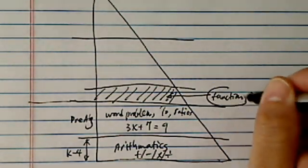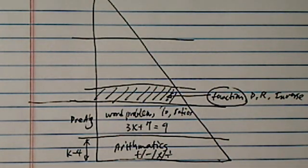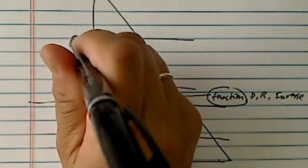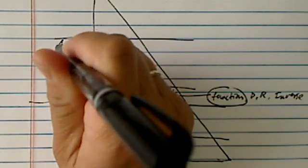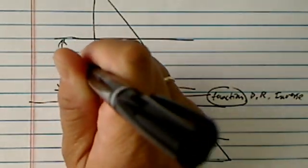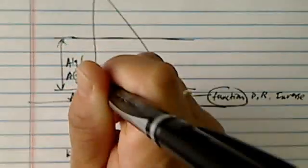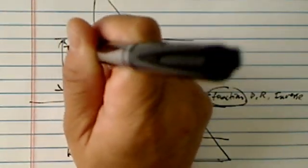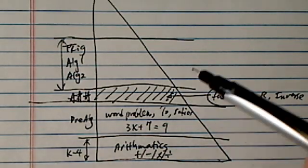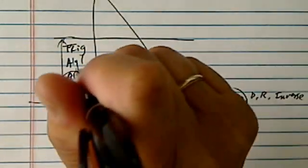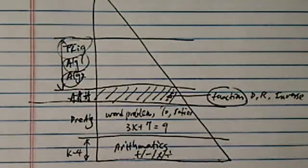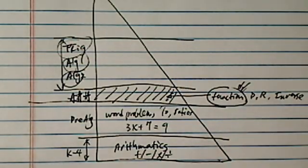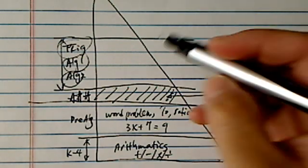The fact that the function is a transitional material signals that you are entering what we call Algebra 1, Algebra 2, and possibly Trig. Trig stands for trigonometry. Before we can get onto Algebra 1, Algebra 2, and Trig, we need this concept called function. So Algebra 1, Algebra 2, and Trig is all about functions.